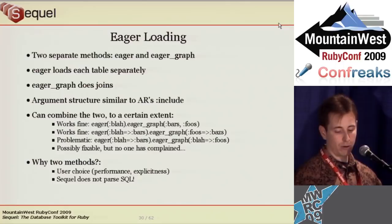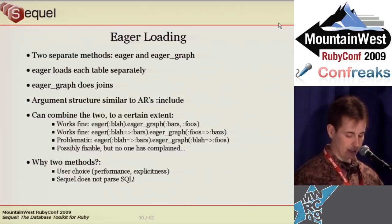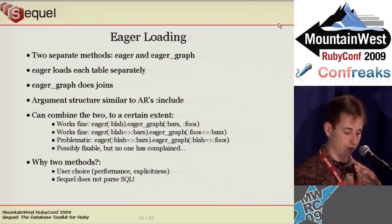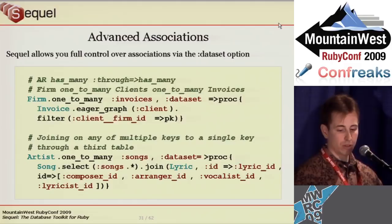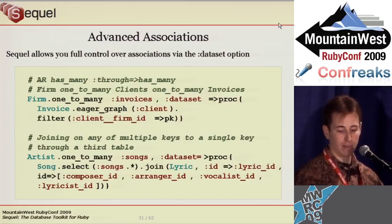Sequel's eager loading gives you a choice: load associations in a separate query with eager, or use a join with eager_graph. Using eager is recommended. If your association uses a different database, you must use eager; if your order or filters use columns in an associated table, you must use eager_graph. Both have the same API and can be used simultaneously. Sequel supports three association types natively, but you can support any other type using the dataset option, which takes a proc that is instance_eval'd.